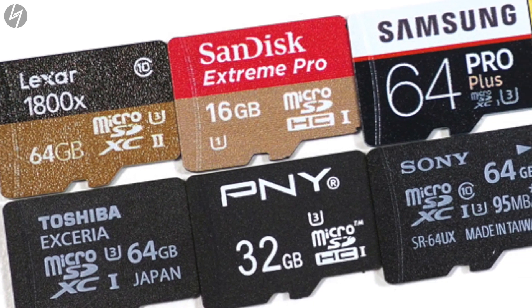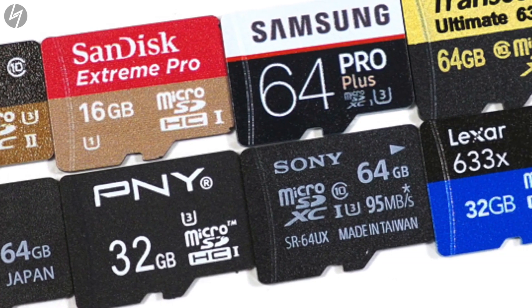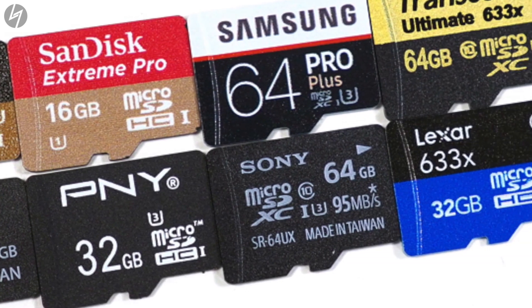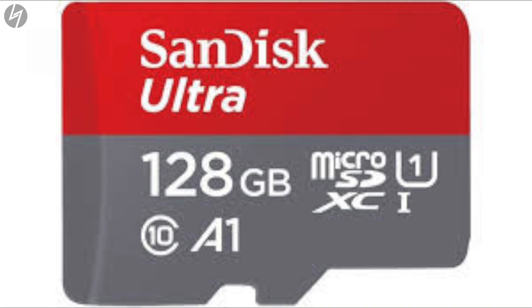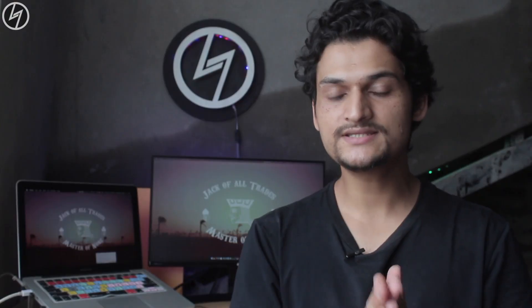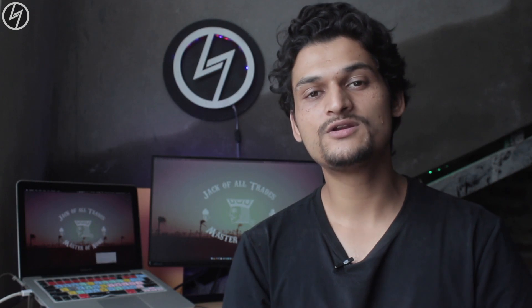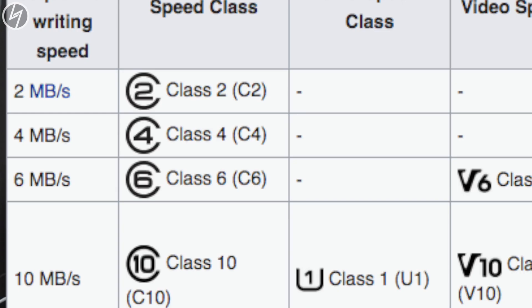How to choose a perfect memory card? To perfectly select a memory card, see the storage, but along with the storage, just see this number in the circle. Sometimes it is inside a U and sometimes it is in a circle. This is known as the class. In the past it had a 2 or 4 rating, but I would recommend you to use a minimum class 10 memory card.